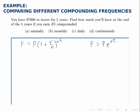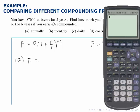So for part a, we'll calculate F equals the $7,000 times, in parentheses, 1 plus the 4% divided by n, which is just 1, raised to the power of 1 times 5. 1 being n, 5 being t. Now we find that that first account, if the interest is compounded annually, at the end of five years, the account will hold $8,516.57.